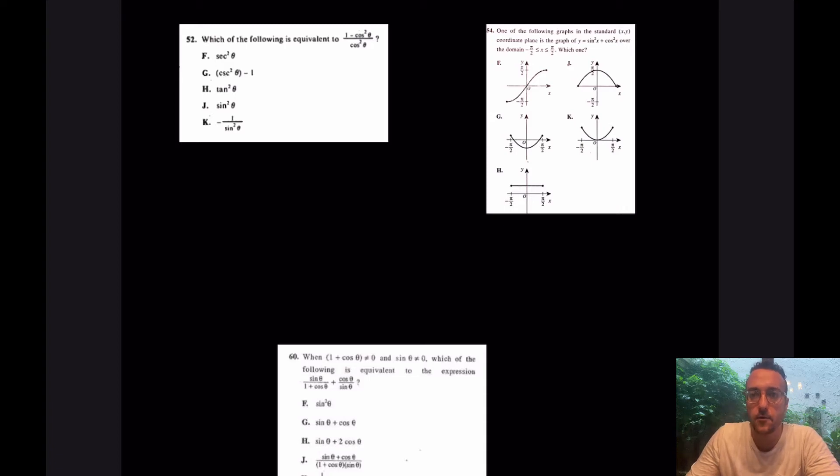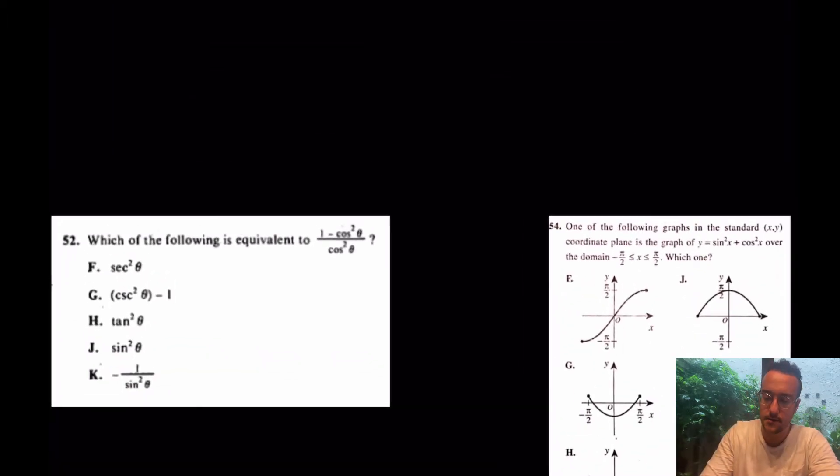All right, boys and girls, we're back for another one. Today, we're working on pre-calc questions from the ACT math, really involving the trig identity. The famous trig identity up here, sine squared x plus cosine squared x equals one. A lot of students forget that this is actually tested on the ACT.